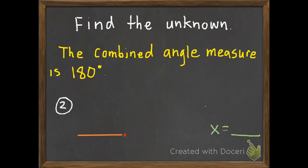Number two. The combined angle measure is 180 degrees. One angle is 100 degrees. What is the unknown angle?